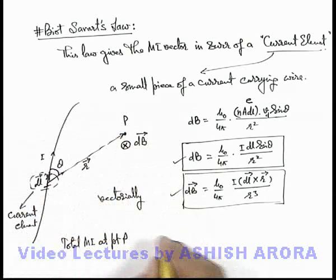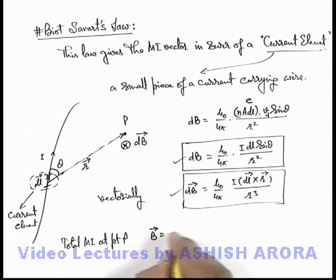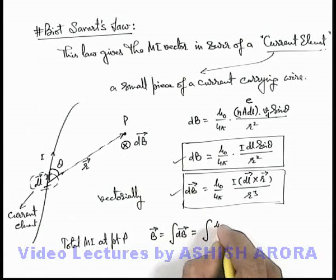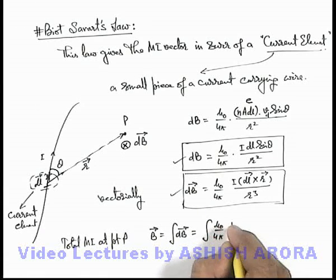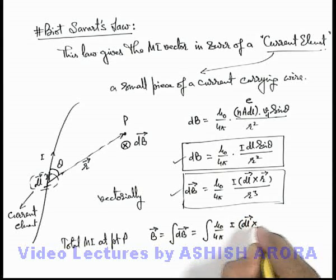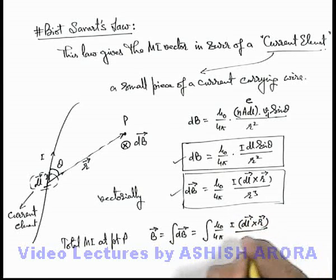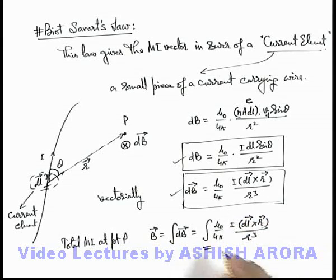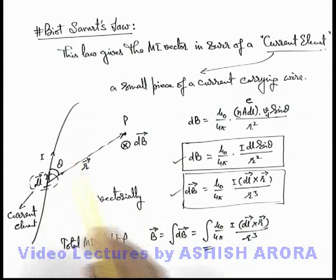Which is due to the whole wire can be written as B vector is integration of dB vector, which is integration of mu not upon 4 pi, I dl cross r by r cube. And the limits will apply according to the actual shape and configuration of the current carrying wire.